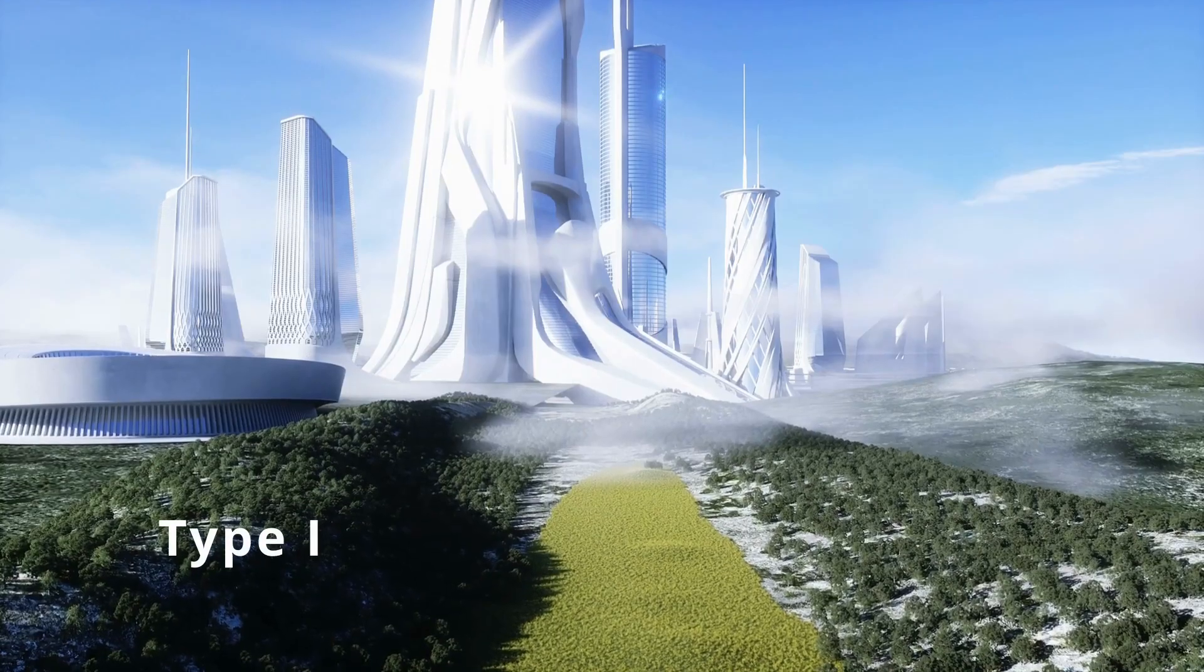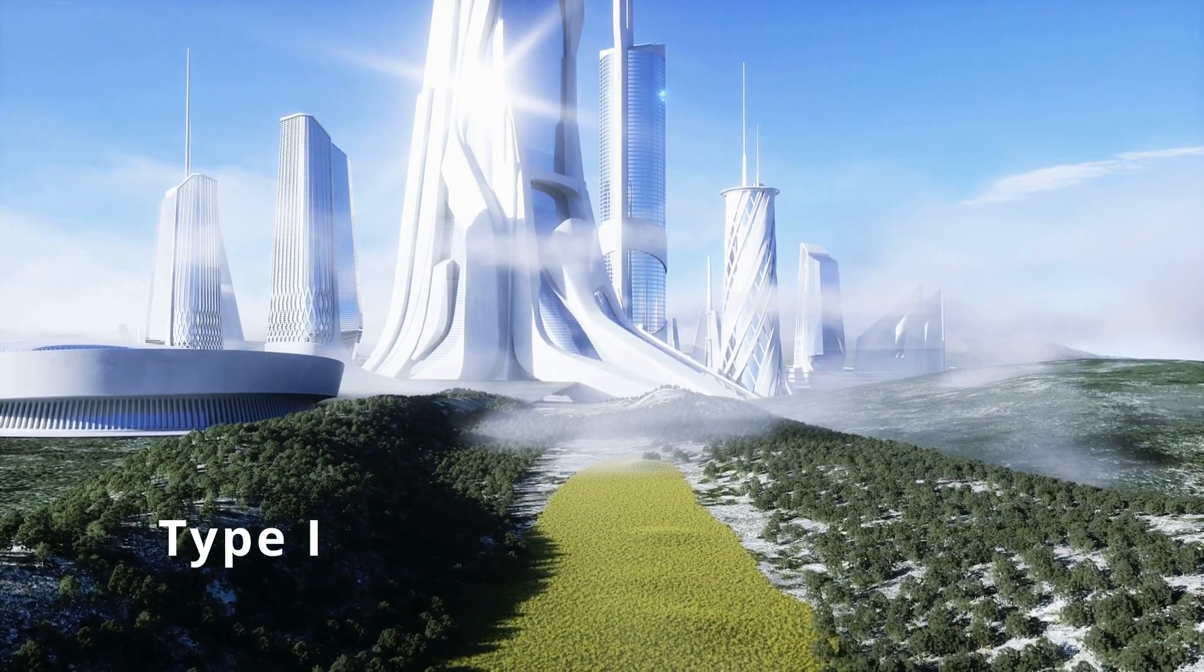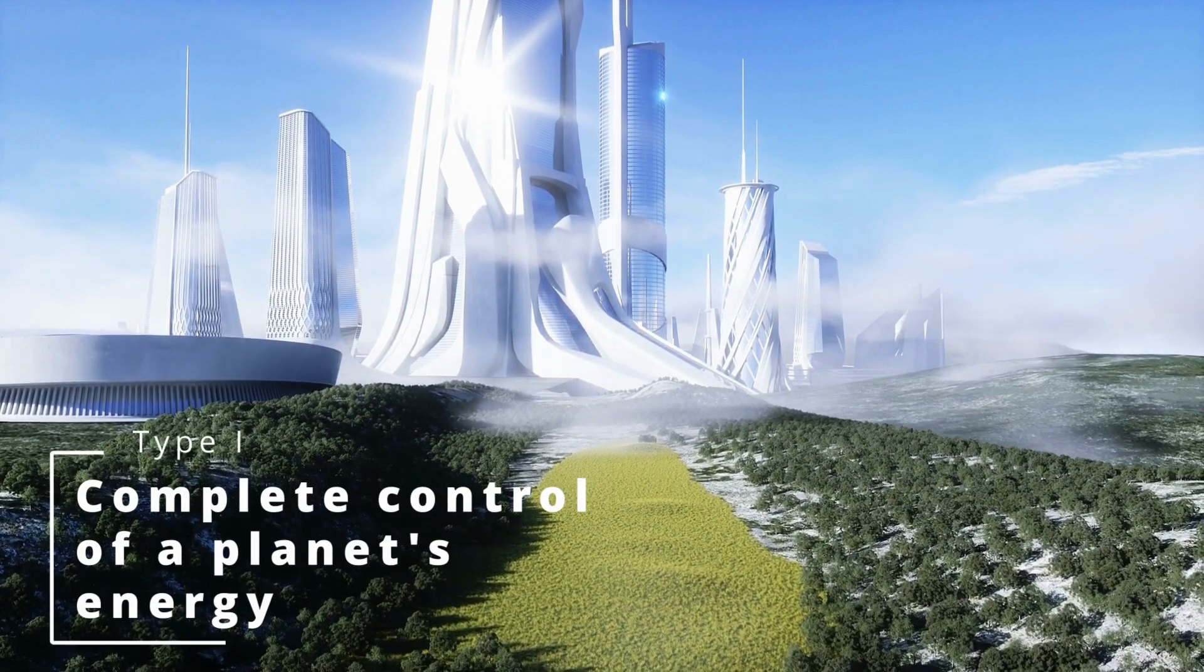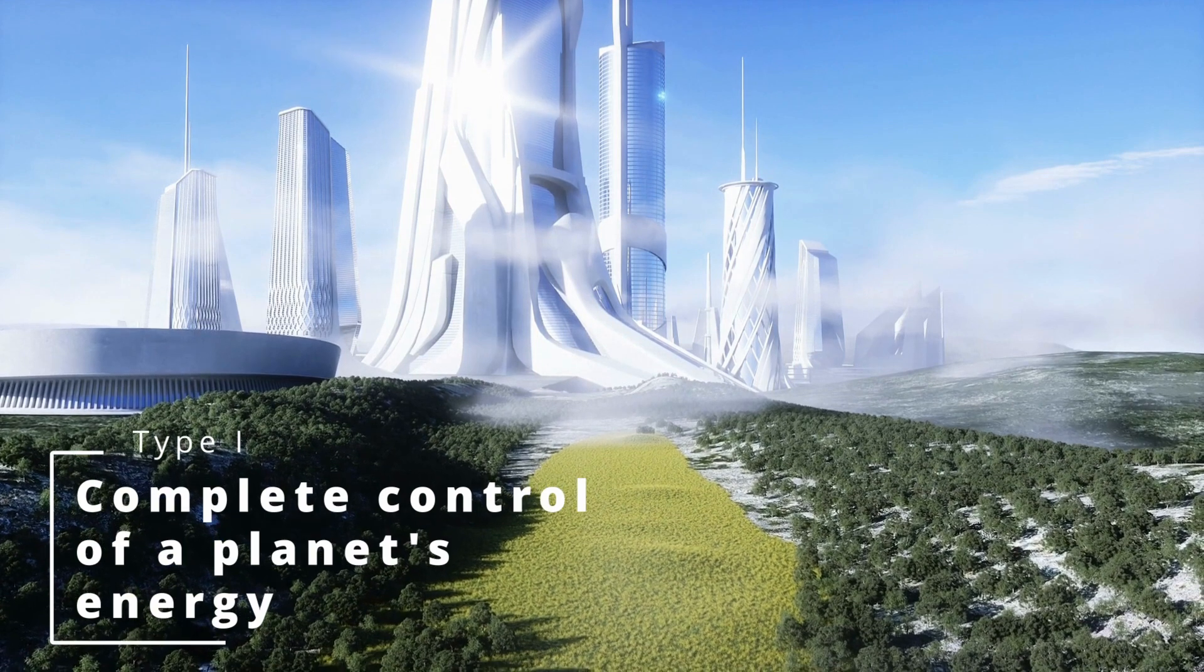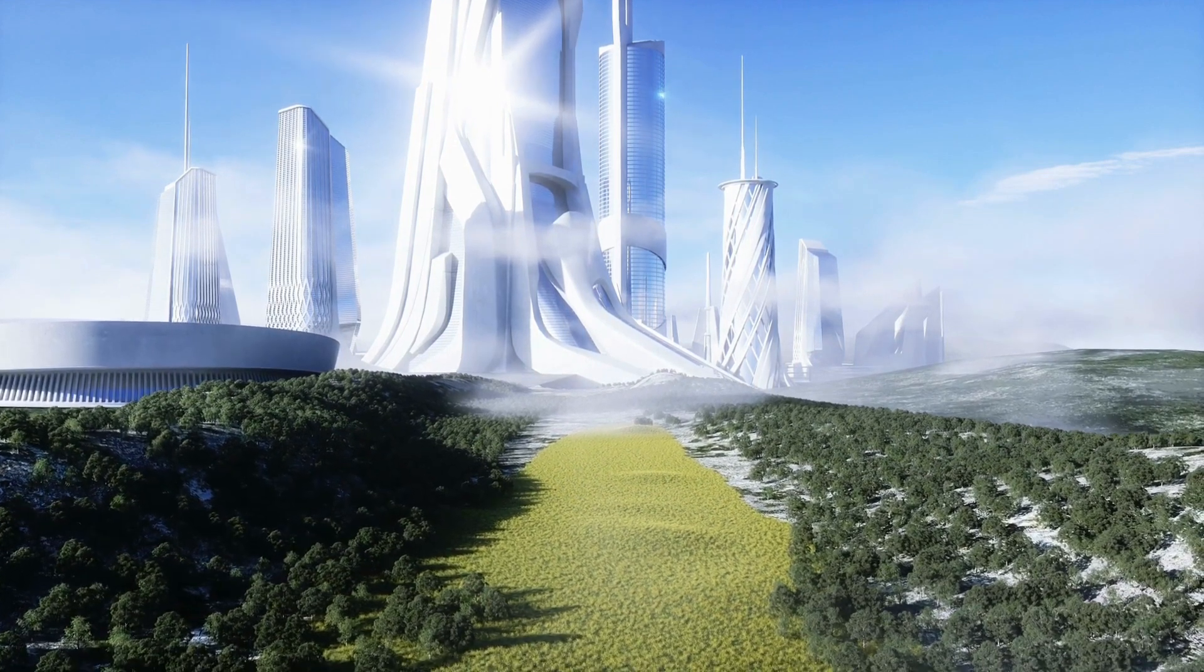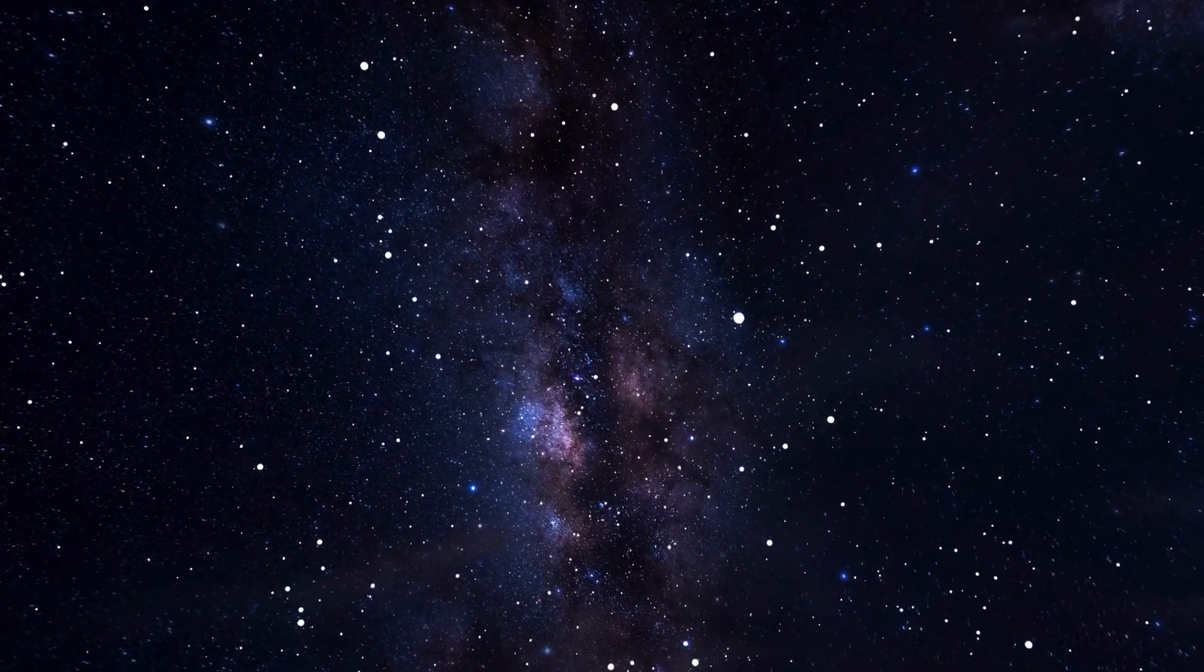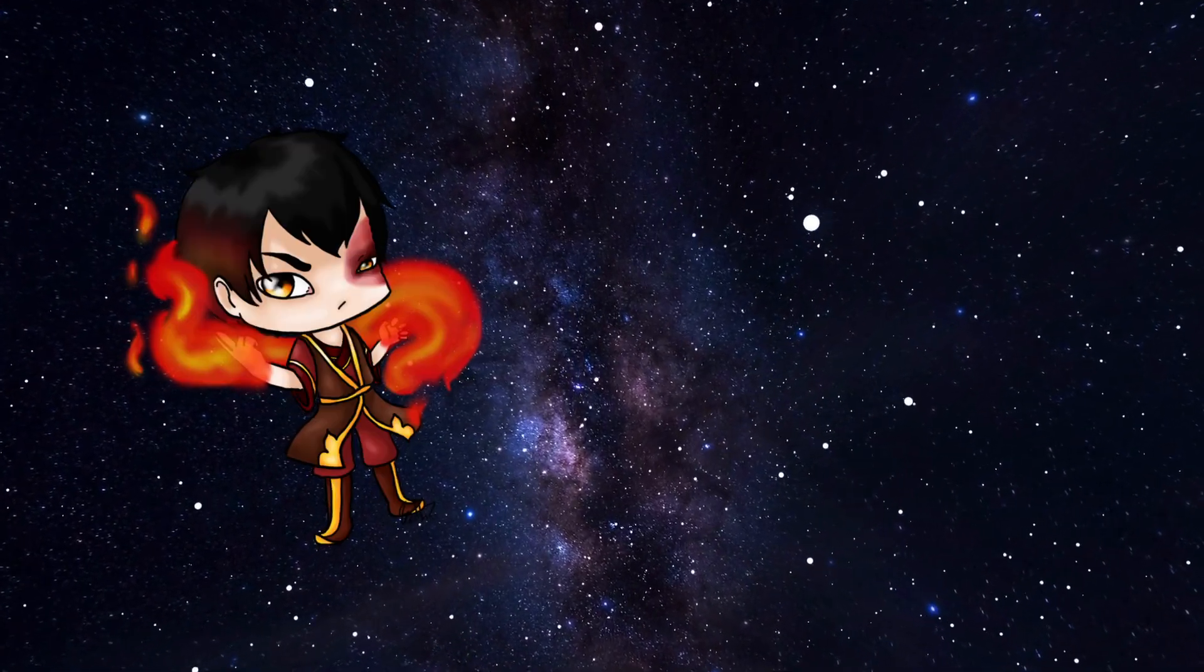A Type I civilization on the Kardashev scale is one that has achieved the ability to harness the energy of its own planet. This is a significant milestone in the development of a civilization, as it would require the development of advanced technology capable of harnessing and controlling the natural resources of the planet, such as solar or wind power.